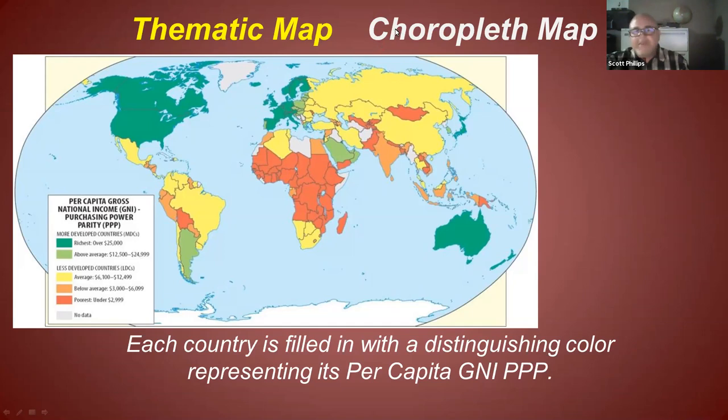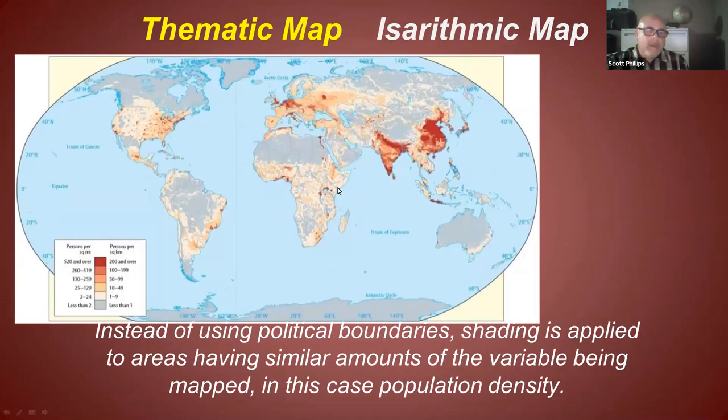There are different types of thematic maps. This is called a choropleth, which uses color coding. Here's a second example called isarithmic that uses different levels of shading to show you where there are different levels of population density. One thing I'll highlight is that there are dense populations of people in India and China, which are the two largest countries in the world. You can see that through the shading here.